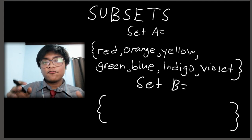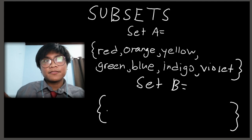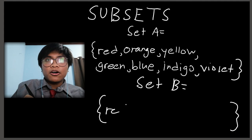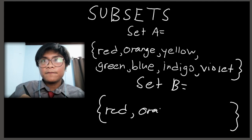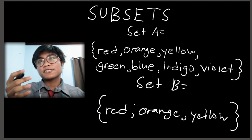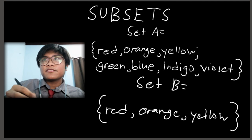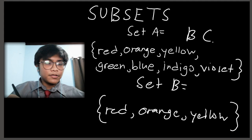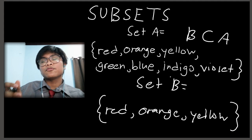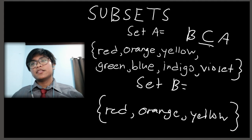In a set, there are also subsets, defined as sets wherein every element can be found in the first set. We will now create Set B. As a subset, we take elements from the first set but not all of them. If we wrote every element from Set A into Set B, that would be an improper subset. But if we only take red, orange, and yellow — not every element of Set A — that is a proper subset, denoted with ⊂, while an improper subset uses ⊆.